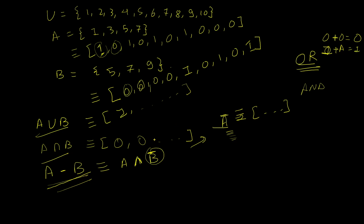So the four fundamental set operations — union, intersection, complement, and difference — can all be computed efficiently using bit representations with a universal set. Having a universal set and these bit representations makes these processes much, much faster. Next video we'll be looking into functions. Hope to see you then — have a good day!